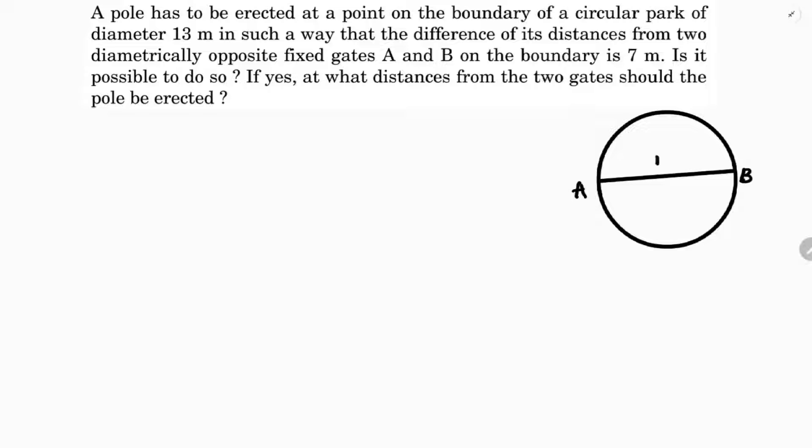So in such a way that the difference of its distance from two diametrically opposite fixed gates A and B. See, here is one gate and the other gate is at B.